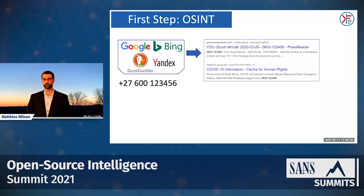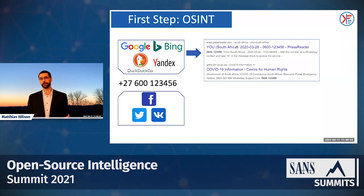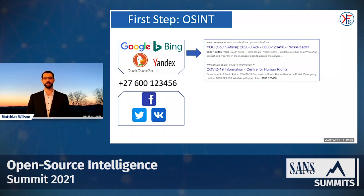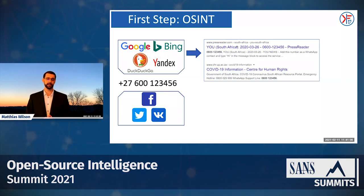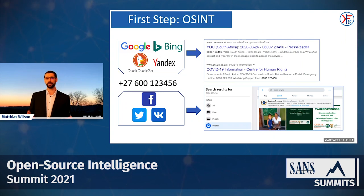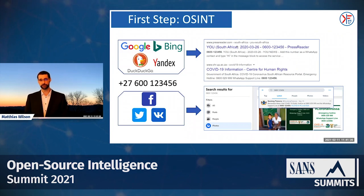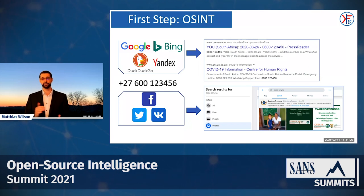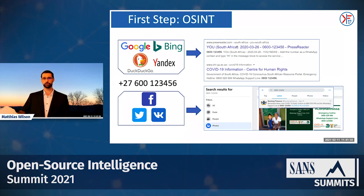Going away from search engines, the next step would be doing the same thing in social media. Each social media platform has search possibilities, so take that phone number in various formats and put it into Facebook, VK, Twitter, and see what pops up. With this example we find results on Facebook — both text-based results and results from images where Facebook did an OCR on the image, extracted this phone number as text, and made it searchable. We also find it on Twitter, and there are likely many other social media sites where it appears.